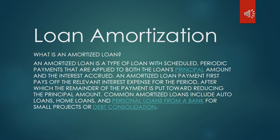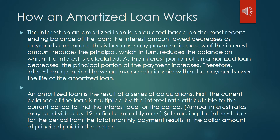That's the concept of loan amortization. Let us next discuss how an amortized loan works. The interest on an amortized loan is calculated based on the most recent ending balance of the loan — so we have a running balance here. The most recent ending balance is the basis for computing your interest. The interest amount owed decreases as payments are made, because any payment in excess of the interest amount reduces the principal, which in turn reduces the balance on which interest is calculated.